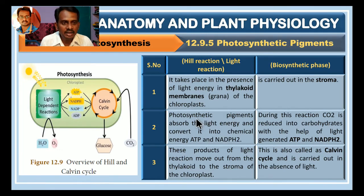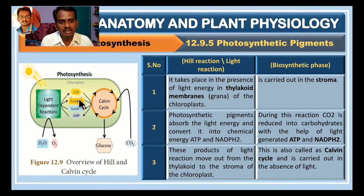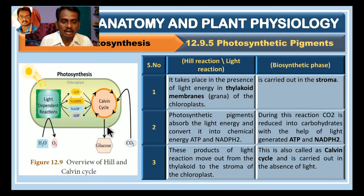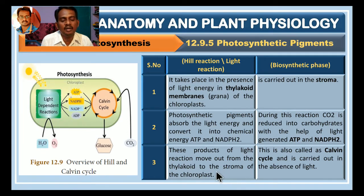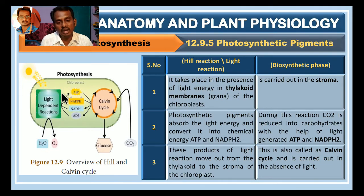The photosynthetic pigment absorbs light energy and converts it into chemical energy — that means ATP and NADPH2 (adenosine triphosphate). This occurs in the grana in the presence of sunlight. The products of the light reaction move out from the thylakoid into the stroma of the chloroplast. The ATP molecules formed are released into the stroma.